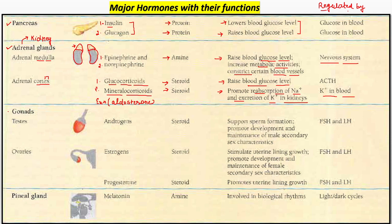Next gland par hum aate hain — lower abdominal part — gonads ki baat karte hain. Male ke case mein hum testis ki baat kar rahe hain, female ke case mein hum ovaries ki baat kar rahe hain. Testis se androgens jo hain woh release ho rahe hain — again they are steroid in nature — jo ki male ke case mein sperm formation ko, development ko, male secondary sexual characteristics ko maintain karne mein madad karte hain. Regulated by follicle stimulating hormone and luteinizing hormone, jo ki anterior pituitary se aa rahe hain.